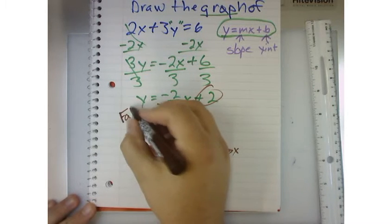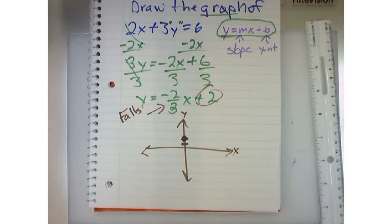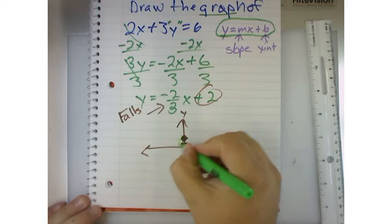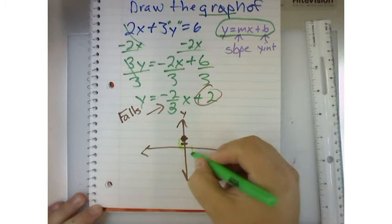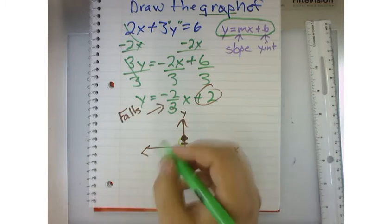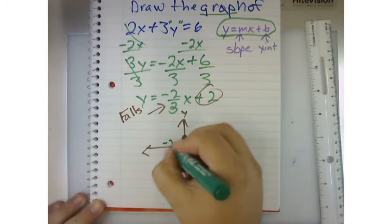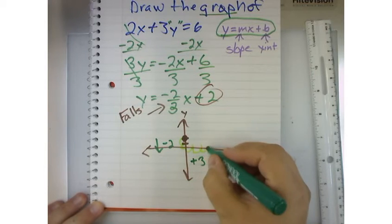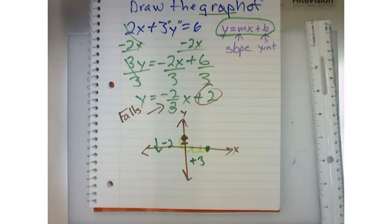And the top number represents the up or down, and the bottom number represents left or right. So I could look at it this way. I could think to myself, I'm going to go down 2, 1, 2, then I'm going to go over 1, 2, 3. And so what that does is that lets me use the slope, which is down 2, over positive 3. And that gives me a point right here. When I connect the two points, then I have my line.